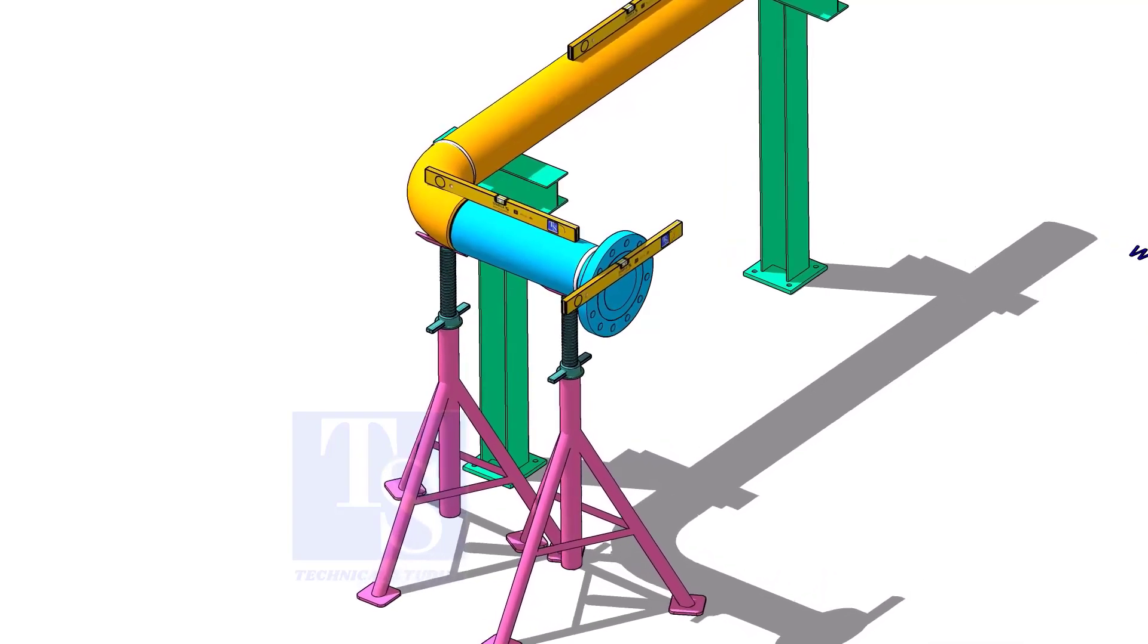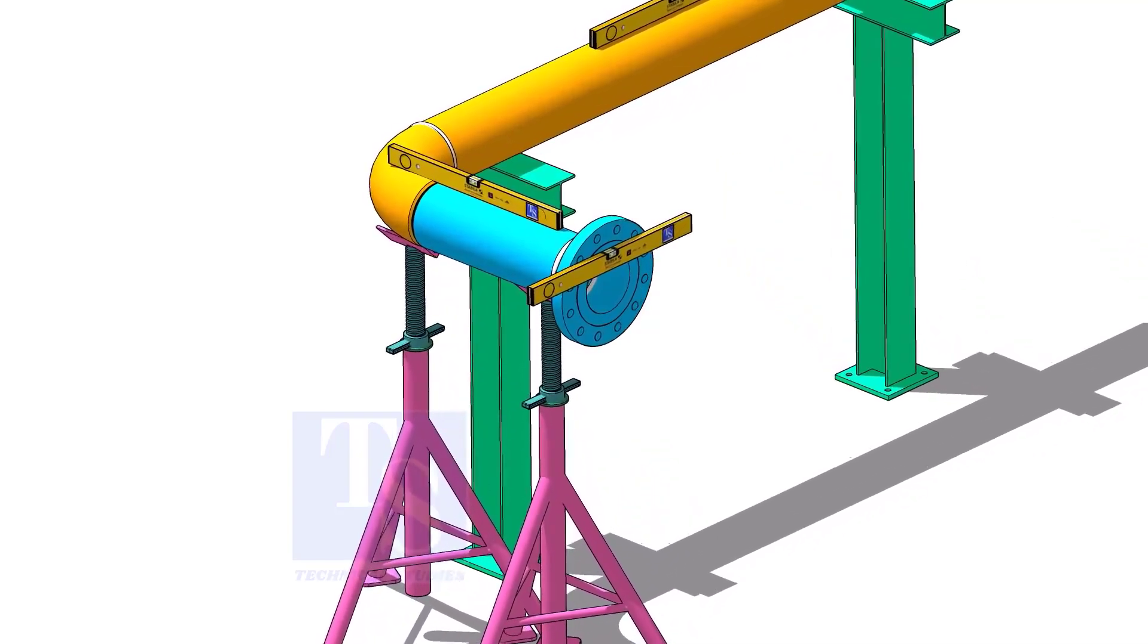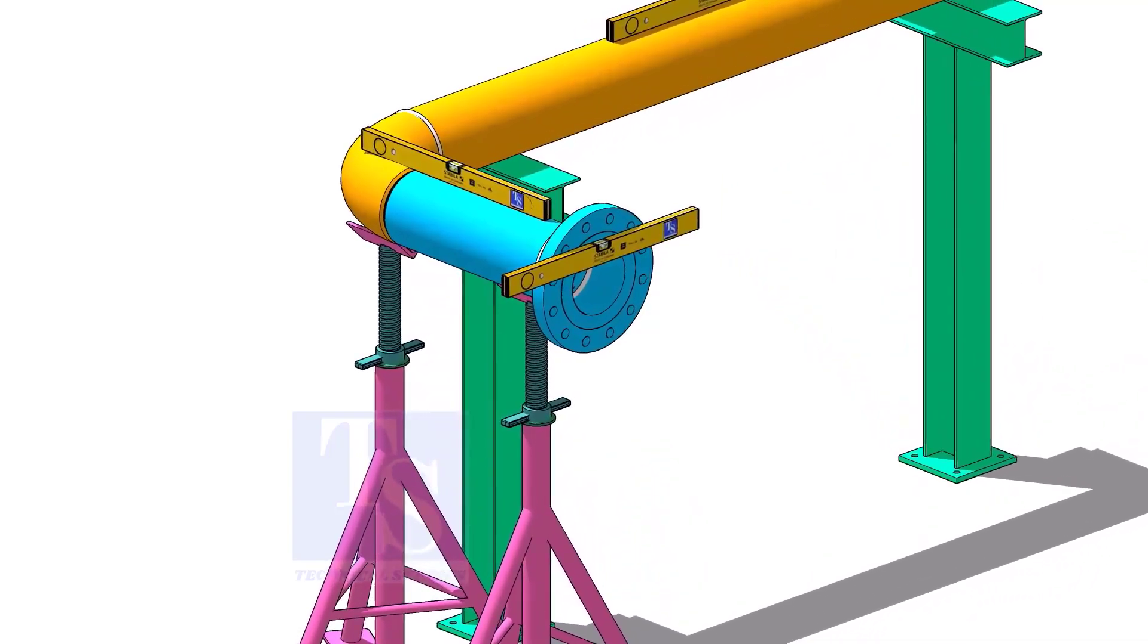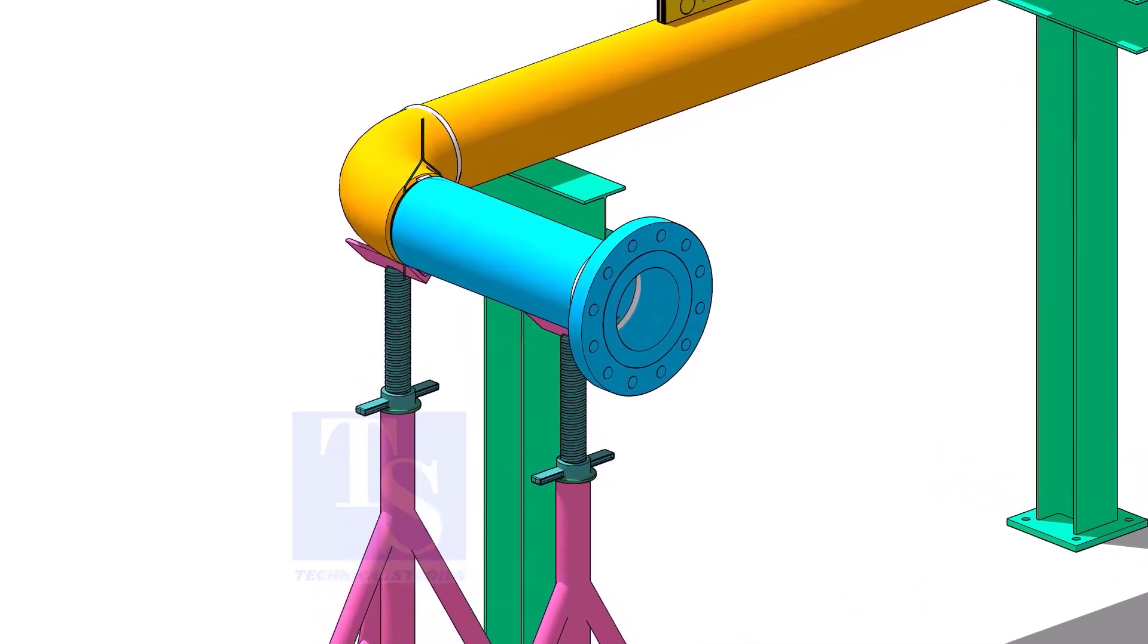Put spool number two in its position and level it. Correct the overall plumbness and tack weld on the top and bottom side of the joint.